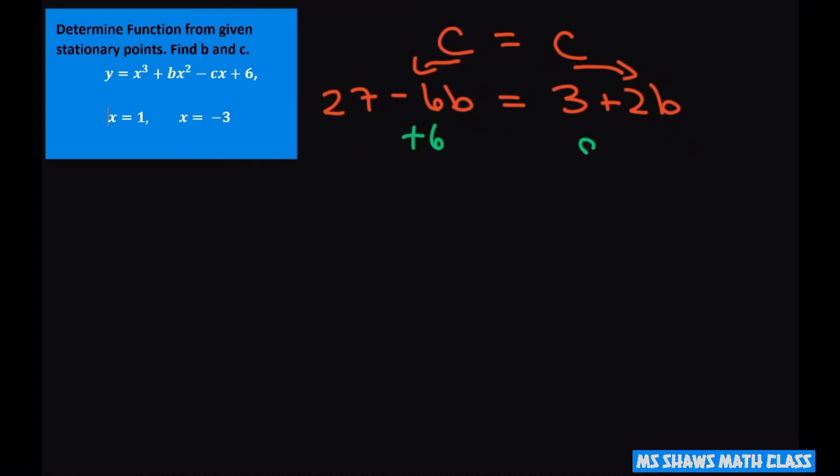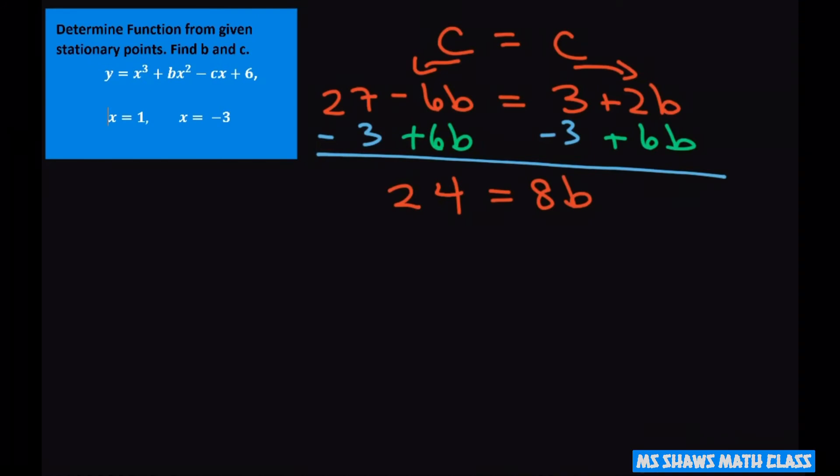I'm going to add 6b to both sides and I'm going to subtract 3 from both sides. So that gives us 24 equals 8b. Therefore, you divide both sides by 8, you get b equals 3.